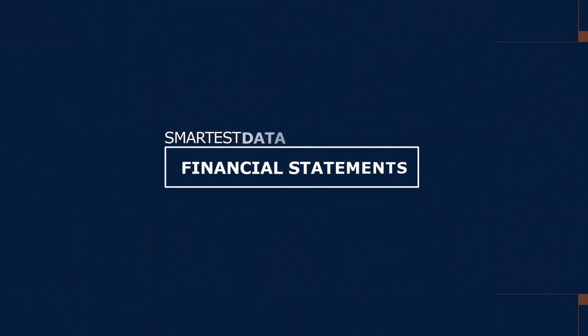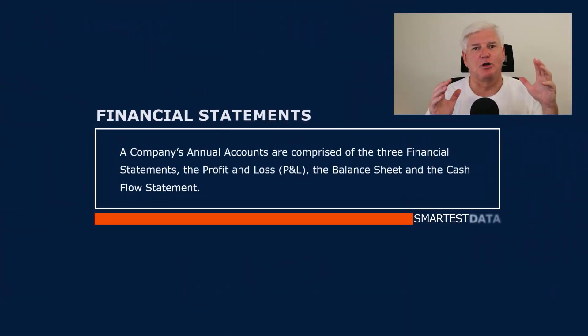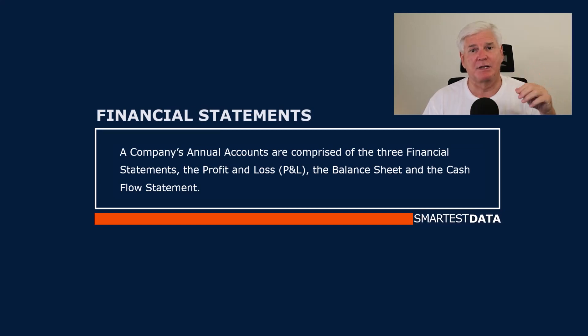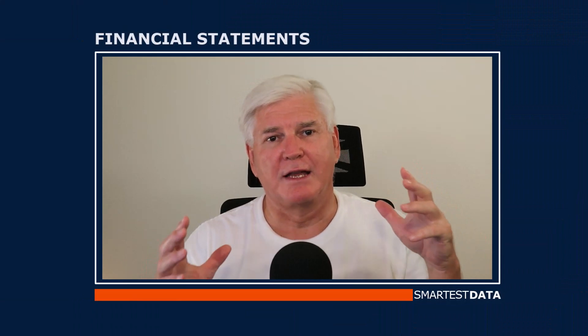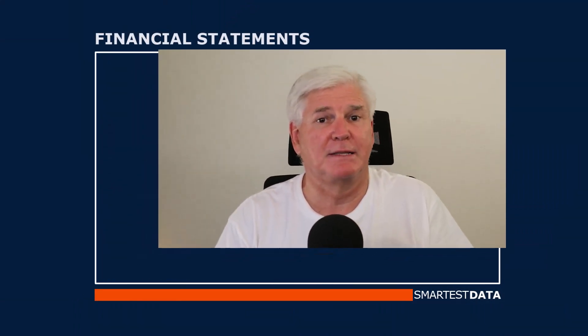A company's annual accounts are compilations of the three financial statements: the Profit and Loss (P&L), the Balance Sheet, and the Cash Flow Statement. These three financial statements combined make up the company's annual accounts.